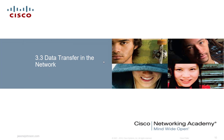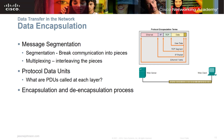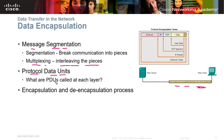Section 3.3 covers data transfer in the network. When transferring data, we can't just send raw ones and zeros — the receiving side needs to know where packets begin and end. So we use message segmentation, breaking communication into pieces, or blocks. Multiplexing, or interleaving the pieces, means they can arrive at different times and be reassembled. You'll also want to look up Protocol Data Units (PDUs) and what they're called at each layer.